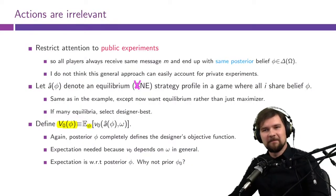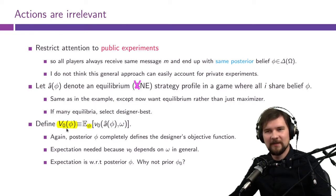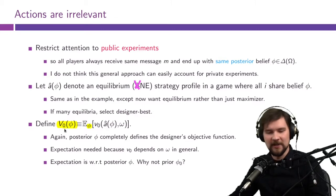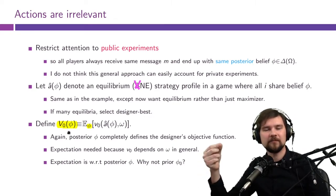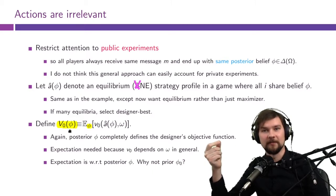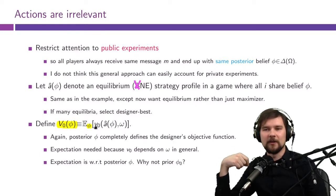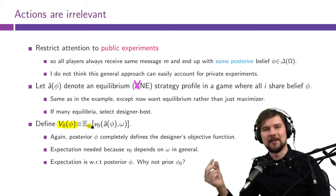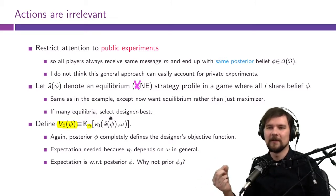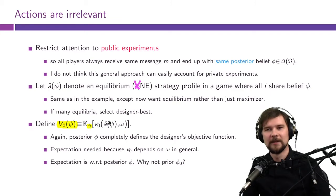What we just did was argue that, first of all, you can get rid of actions â in solving your optimal information design problem — meaning you can define the designer's payoffs directly in terms of beliefs. And if your small v0 depends on the true state ω, you need to take expectation with respect to posterior states, because this posterior distribution represents the distribution of states in which you will receive this expected payoff according to this optimal allocation rule.